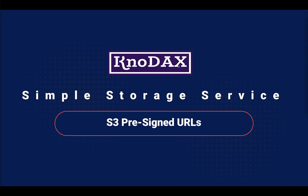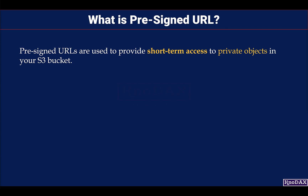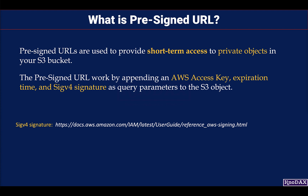Welcome back. This video is about Amazon S3 pre-signed URLs. Pre-signed URLs are used to provide short-term access to private objects in your S3 bucket. They work by appending an AWS access key, expiration time, and SigV4 signature as query parameters to the S3 object.